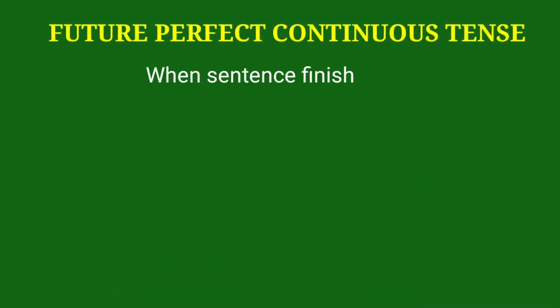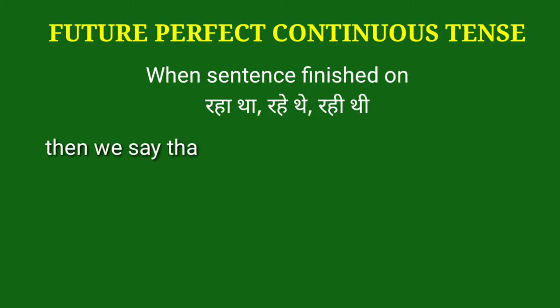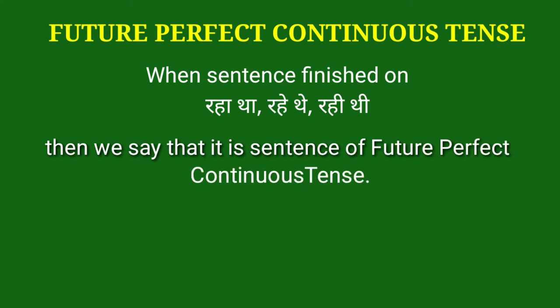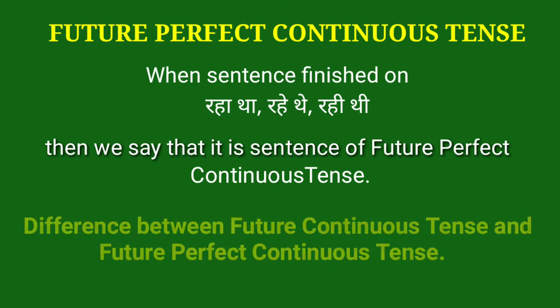When a sentence finishes on 'raha tha', 'rahe the', or 'rahi thi', then we say that it is a sentence of Future Perfect Continuous Tense. जब कोई भी वाक्य रहा था, रहे थे, रही थी पर समाप्त होता है, तो वह future perfect continuous tense होता है।